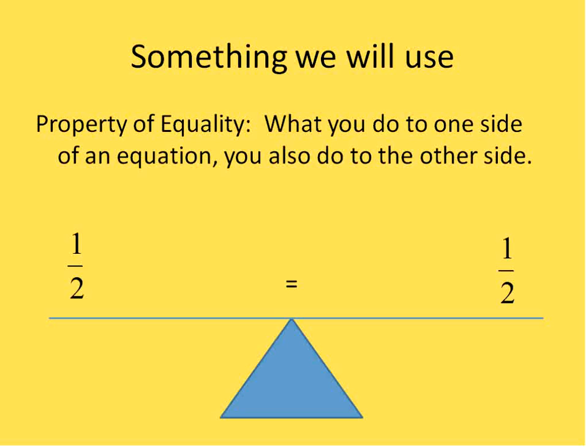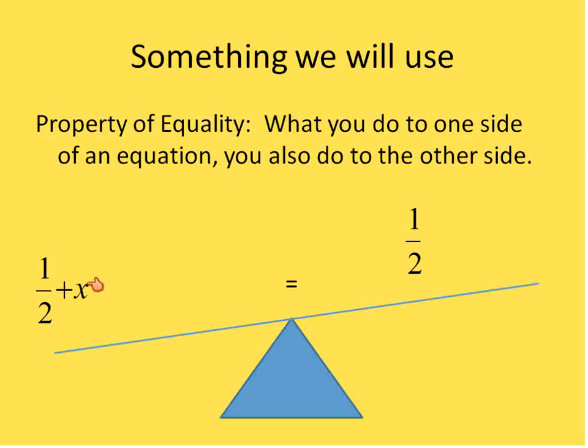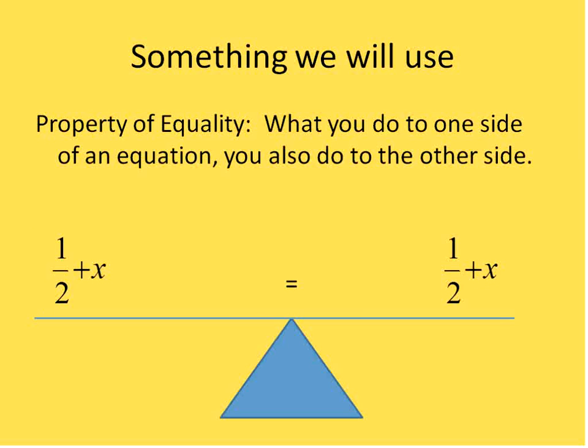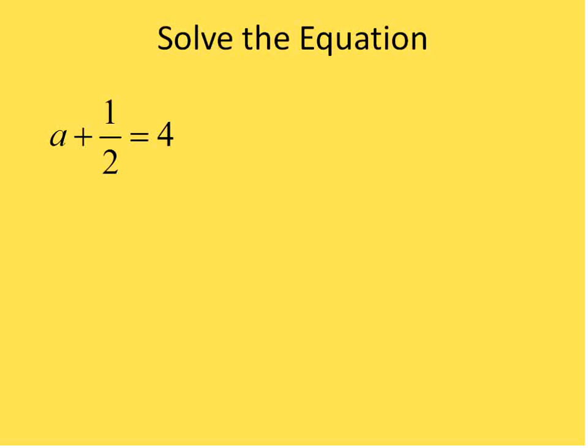I want to give a brief background on the property of equality. The property of equality means whatever you do to one side of an equation, you do to the other side. An equation is like a balance scale — if you add x to one side, it becomes unbalanced, so you need to add x to the other side to restore balance. We're going to be doing a lot of adding things to both sides of an equation today.